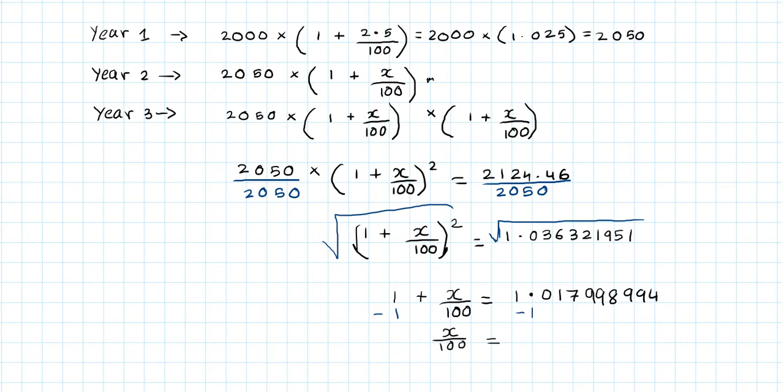Then I multiply by 100 on both sides, and that will give me my rate: 1.7998994.